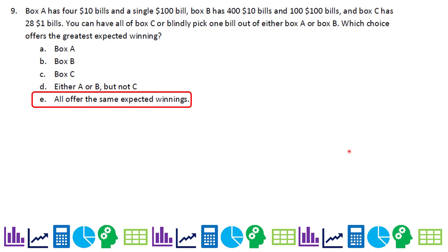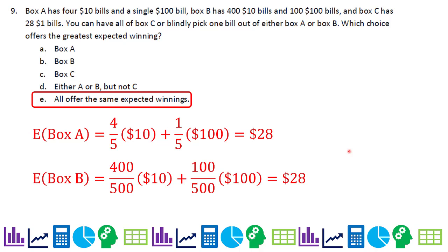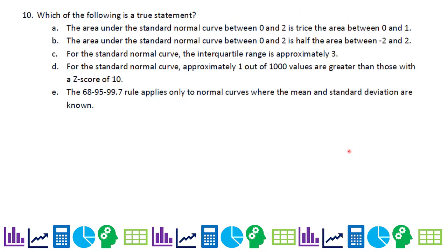Problem 9: Box A has four $10 bills and one $100 bill; Box B has four hundred $10 bills and one hundred $100 bills; Box C gives you all 28 one-dollar bills ($28). Expected value for Box A: (4/5)×$10 + (1/5)×$100 = $8 + $20 = $28. Expected value for Box B works out the same — $28. Box C is also $28. The answer is E: they all offer the same expected value.